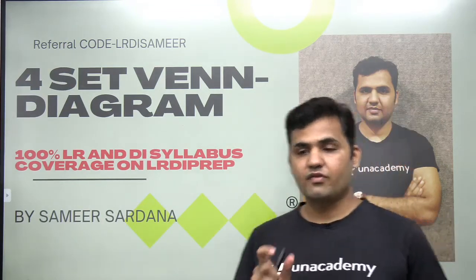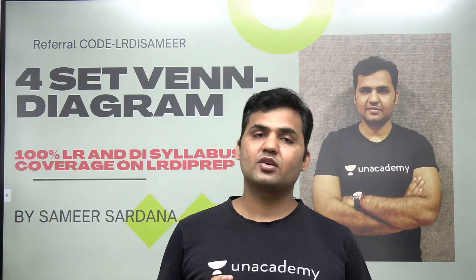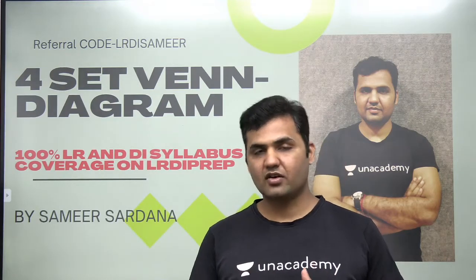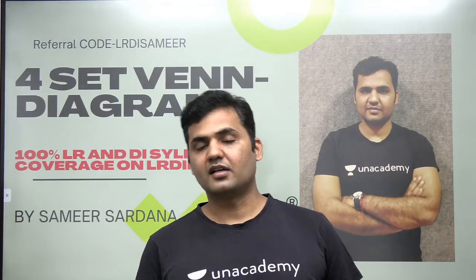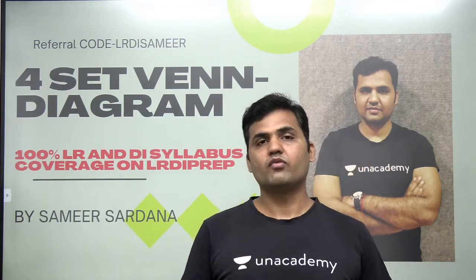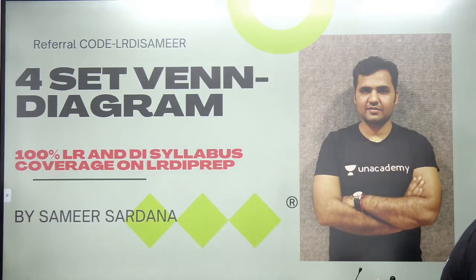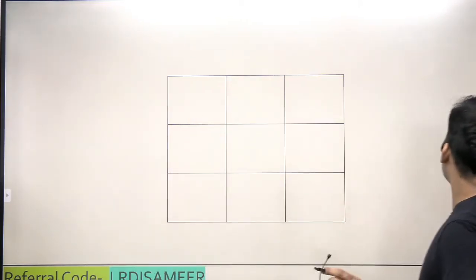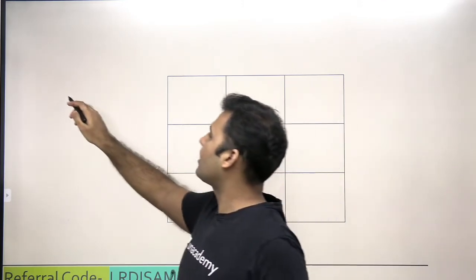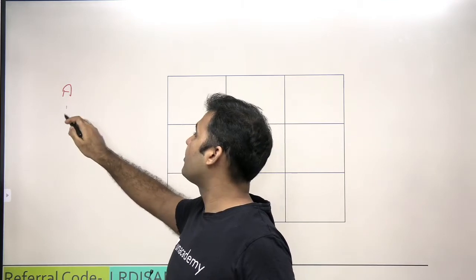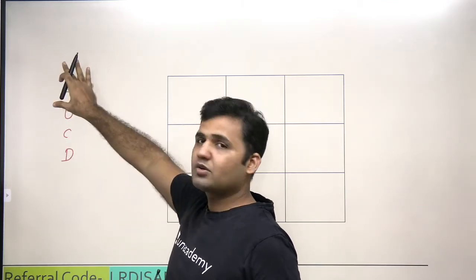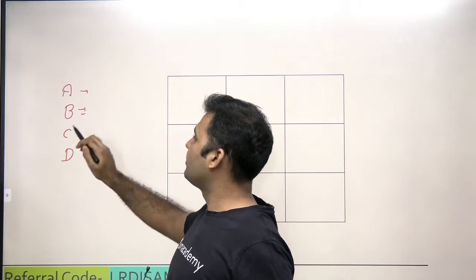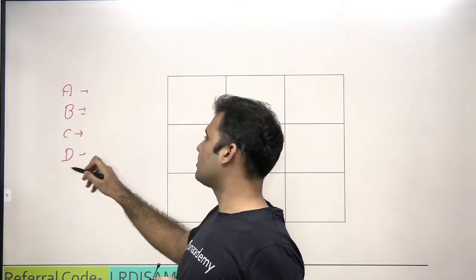A set is a well-defined collection of objects. We will cover the basics of how to make a Venn diagram. Let's say in one particular question you have four sets: A, B, C, and D. A means students belonging to set A, B means students belonging to set B, C means students belonging to set C, and D means students belonging to set D.